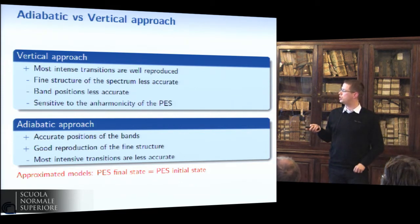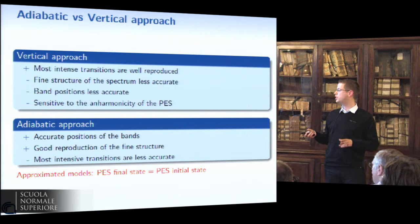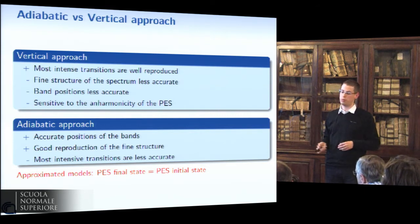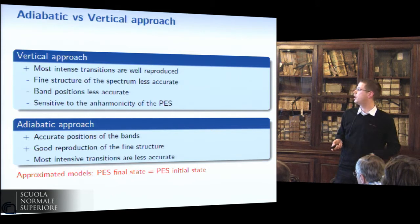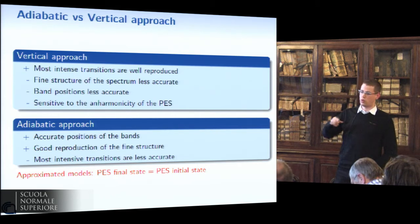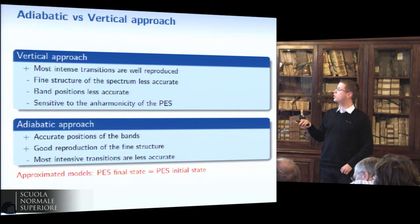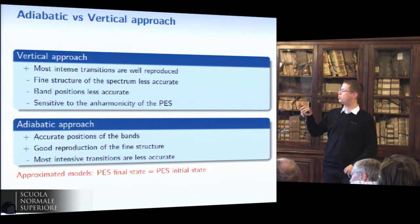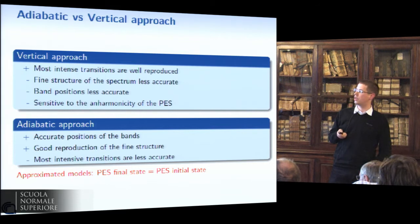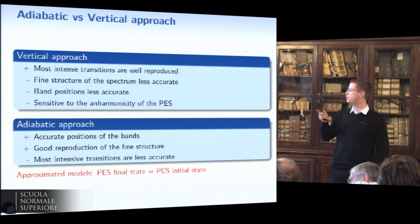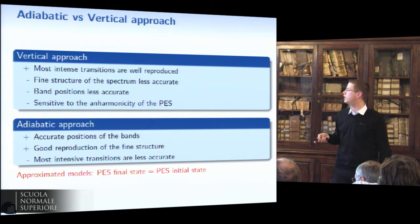From these two approaches we can derive approximating models in which the PES of the final state is considered the same as the PES of the initial state. This strongly reduces the computational cost, since for the adiabatic approach we only need a geometry optimization of the final state, and for the vertical approach we only need the gradient.